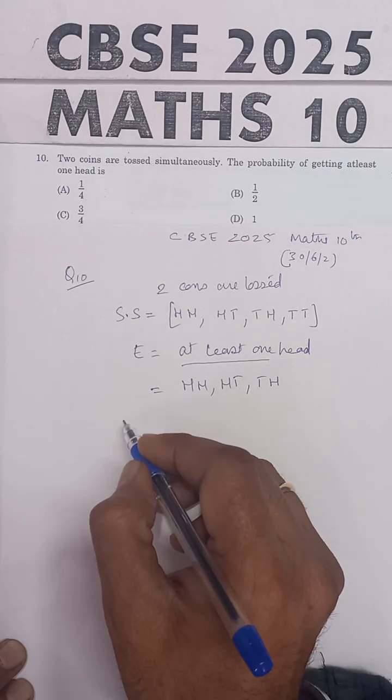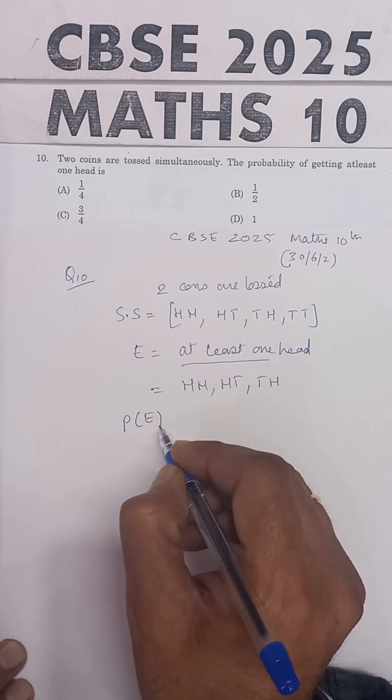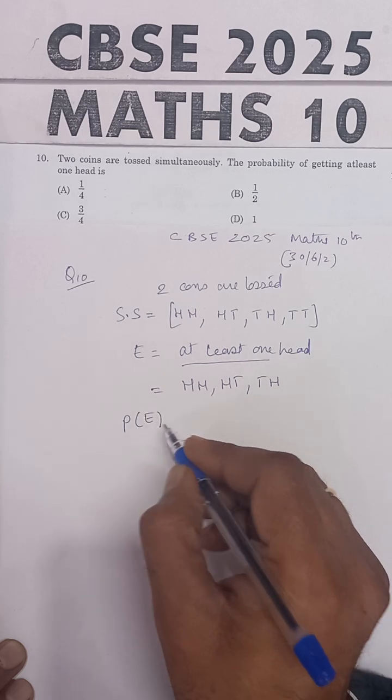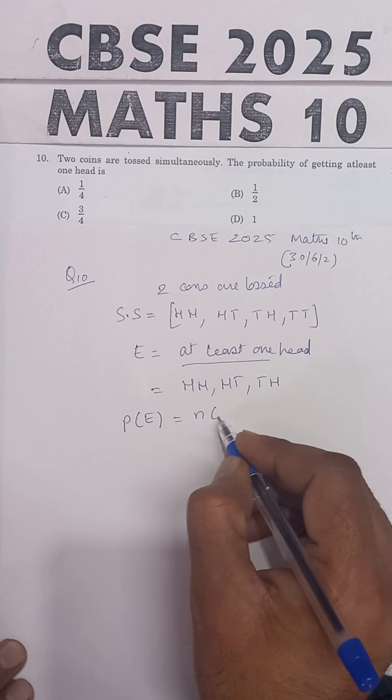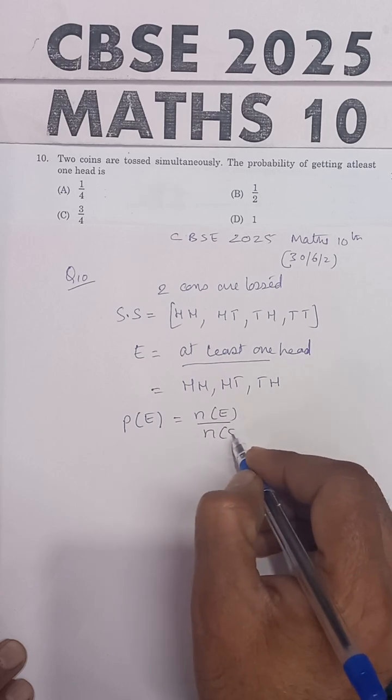Now we need the probability of getting at least one head. So this will be N(E) upon N(S).